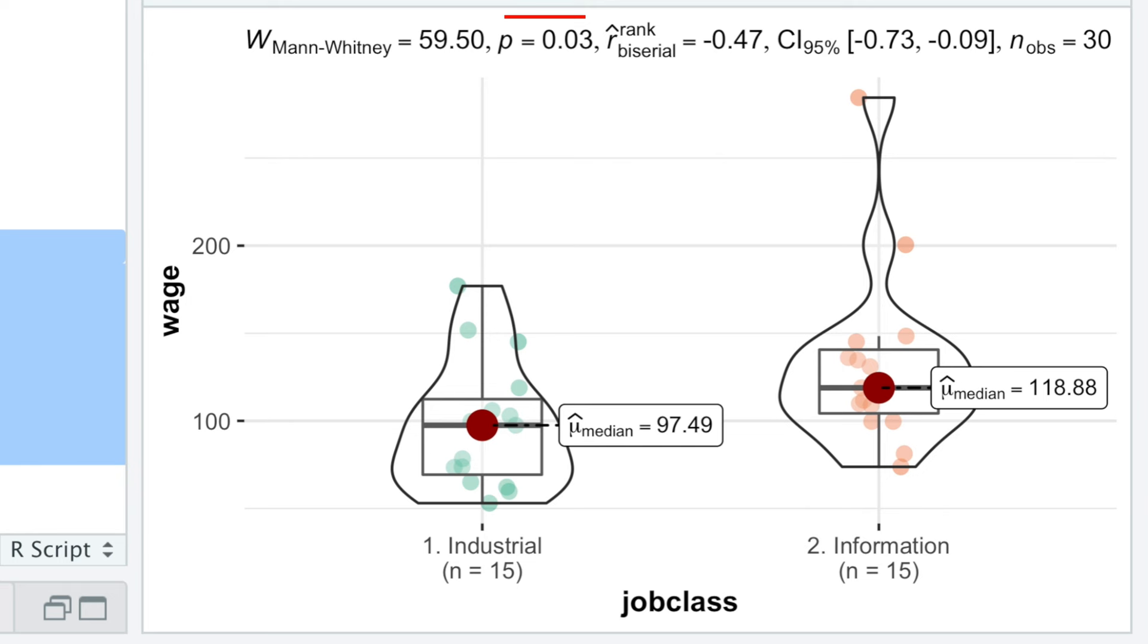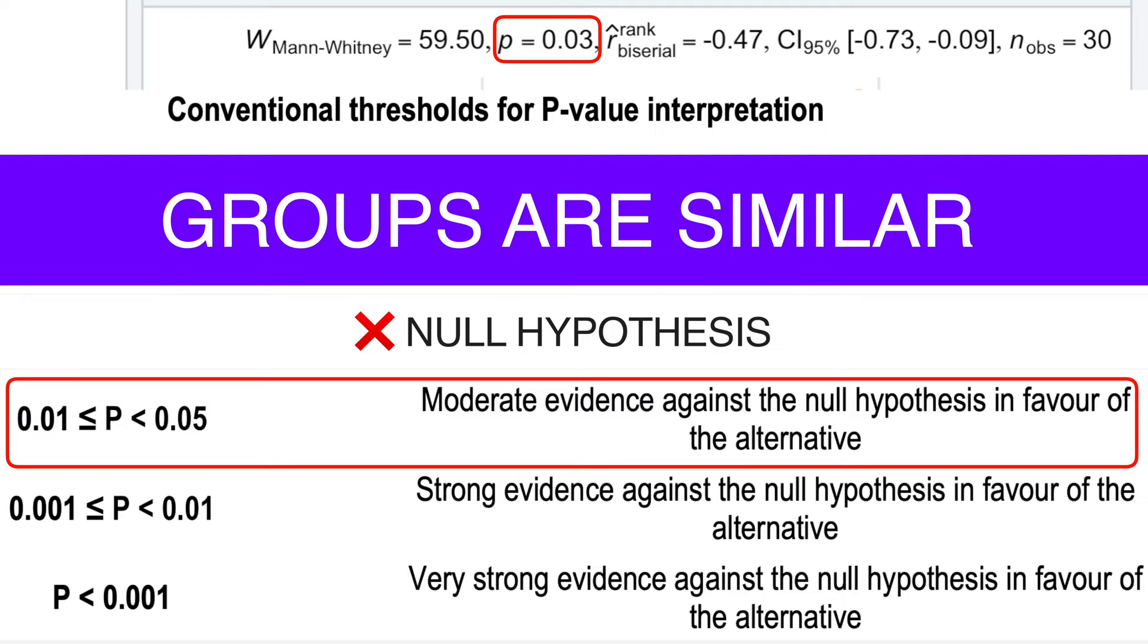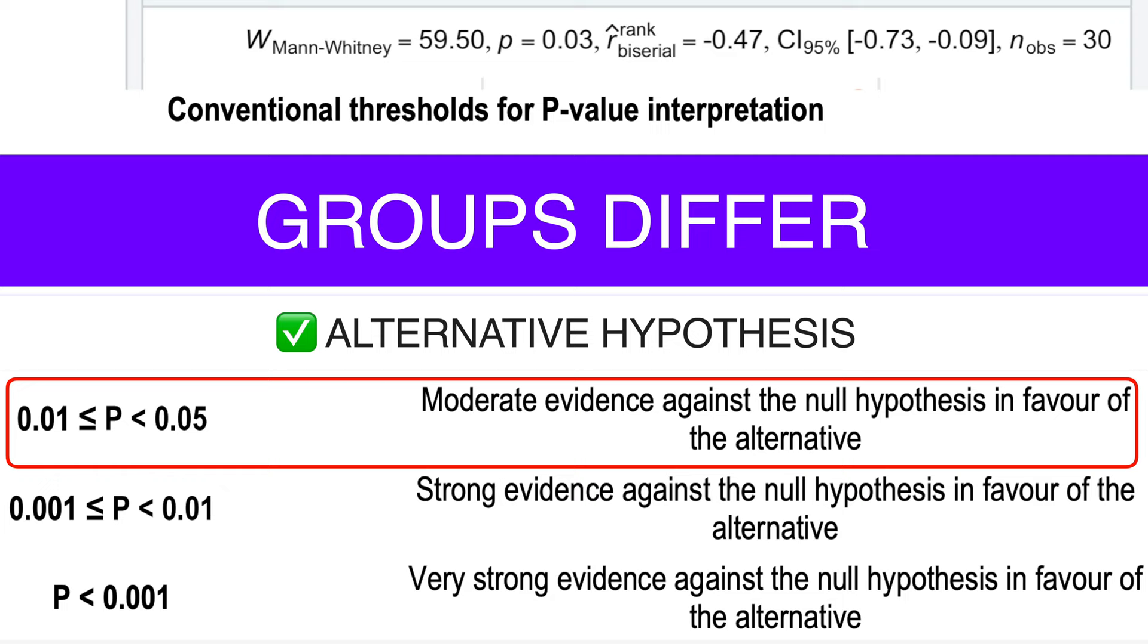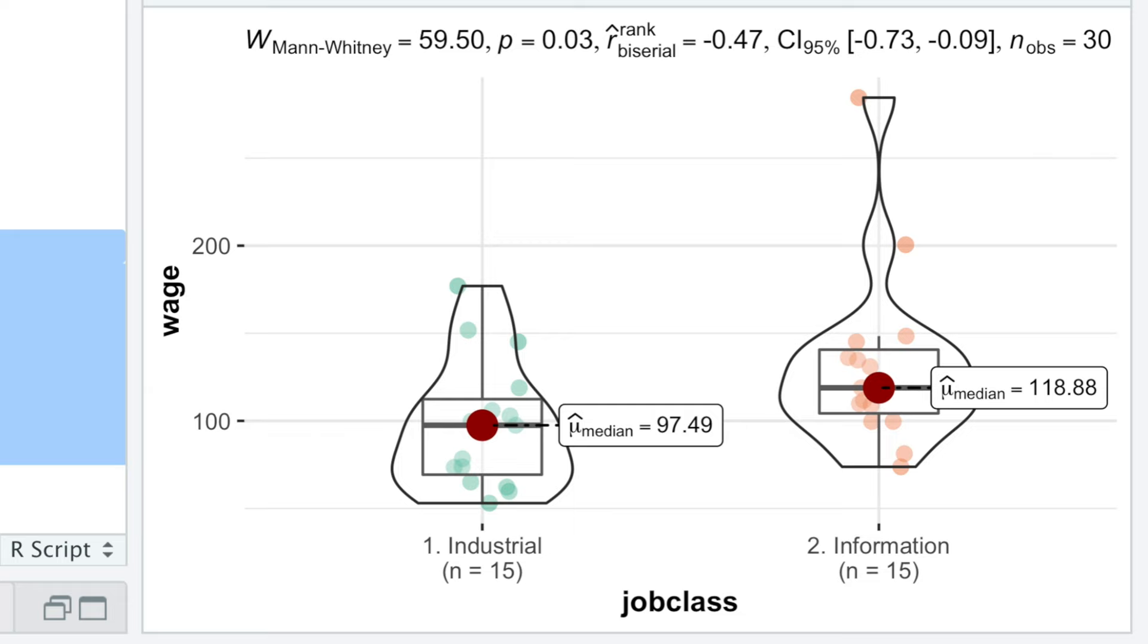Our p-value of 0.003 shows moderate evidence against the null hypothesis that groups are similar, in favor of the alternative hypothesis that groups differ. This difference is often reported as a difference in medians. But here is the catch.